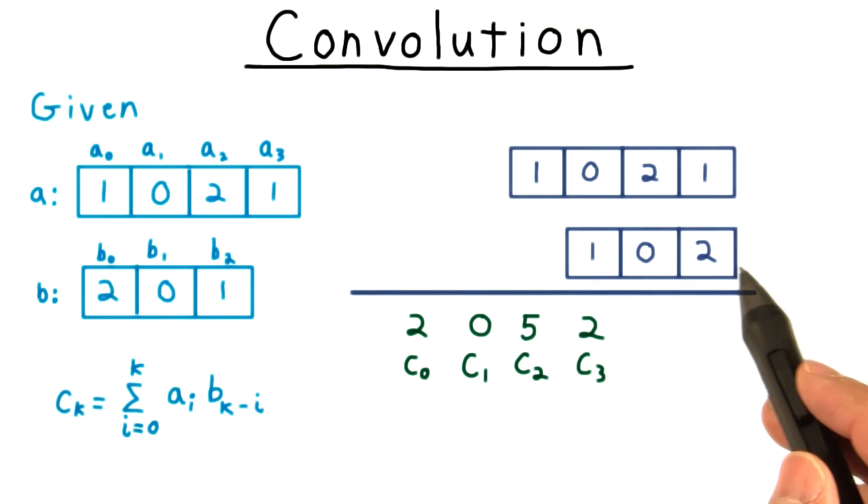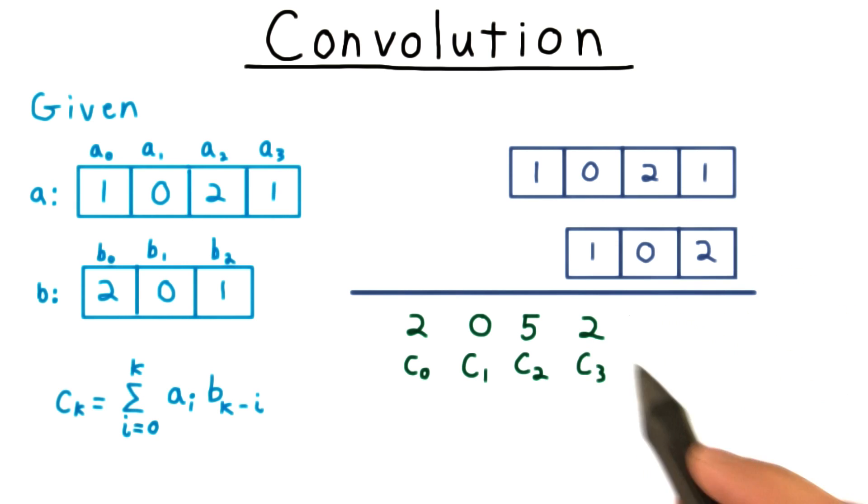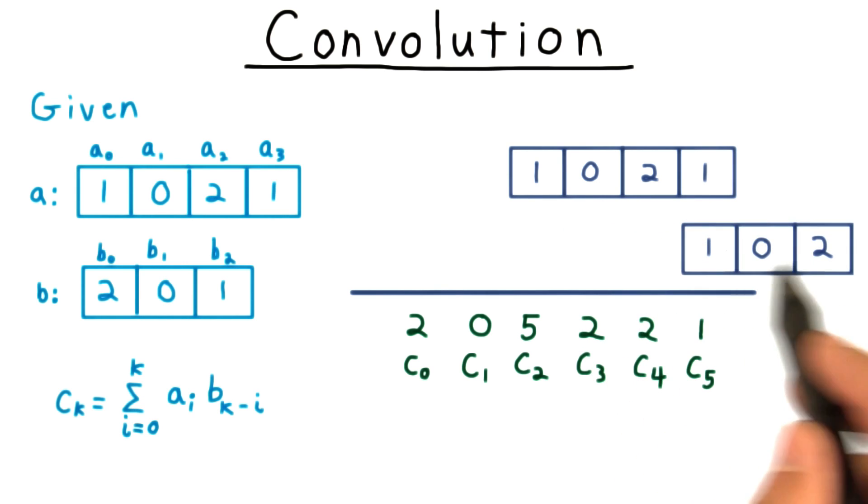And we continue sliding b along, doing these products, and then summing all things together. And we keep doing this until there is no more overlap left.